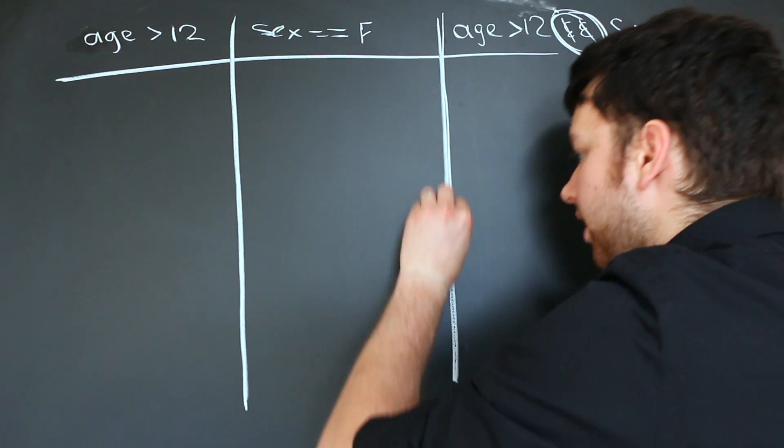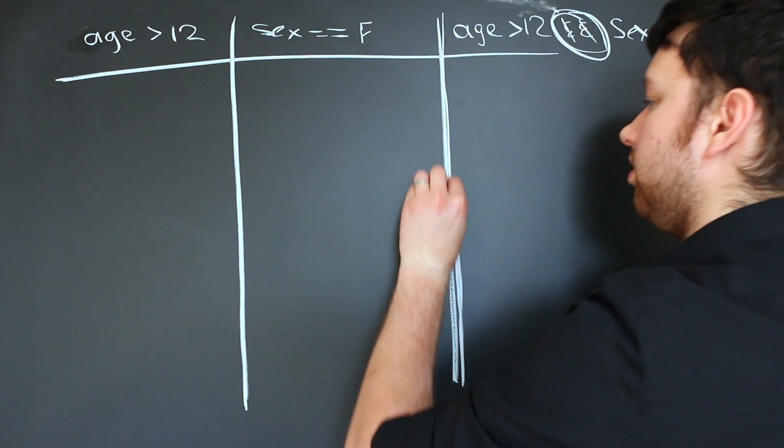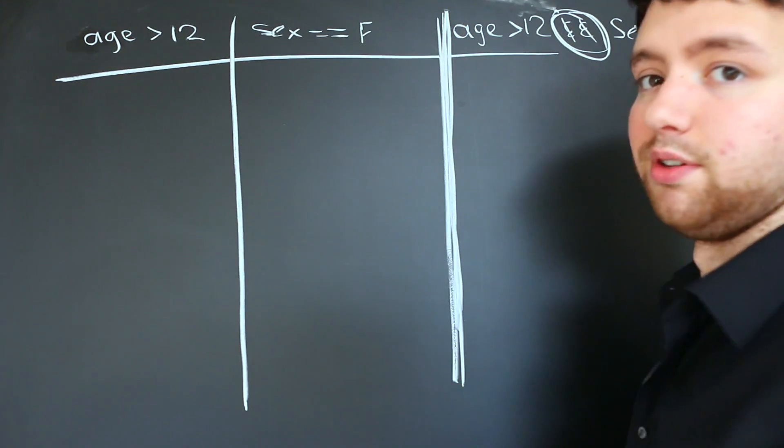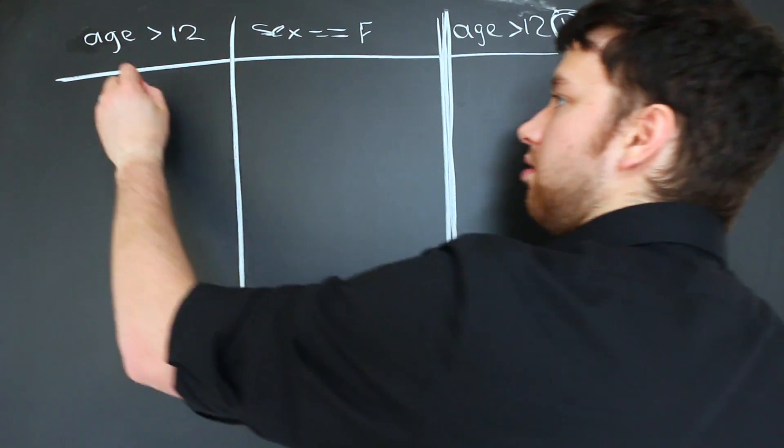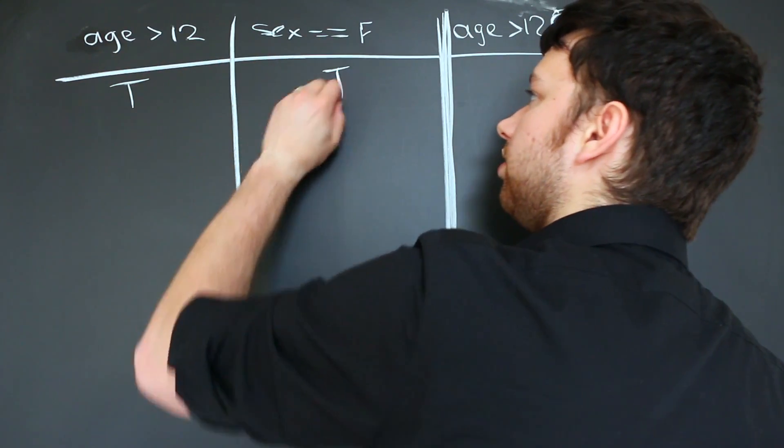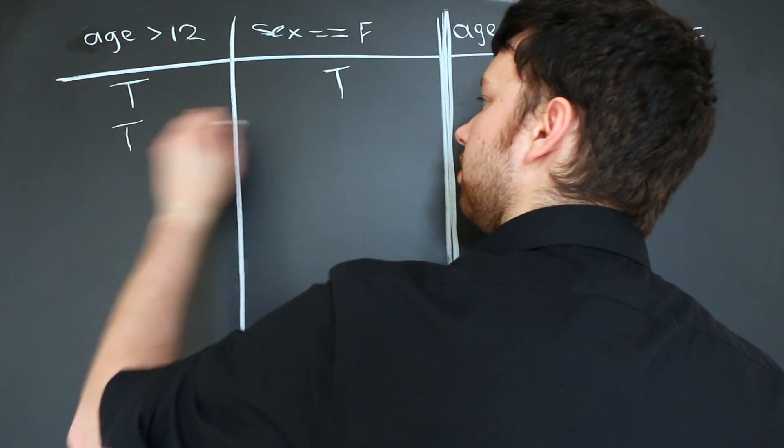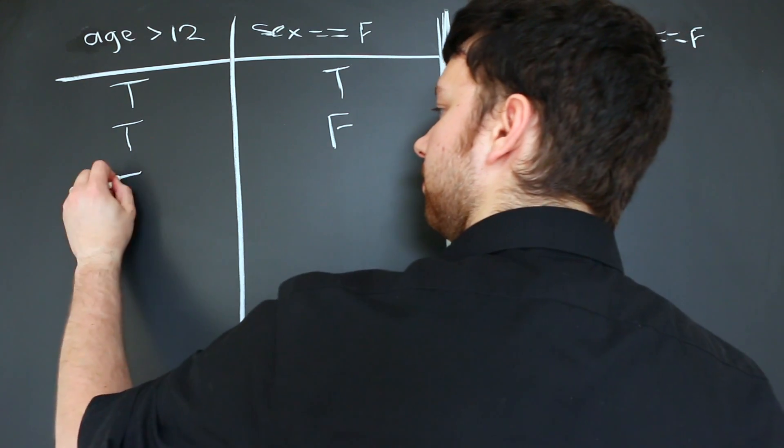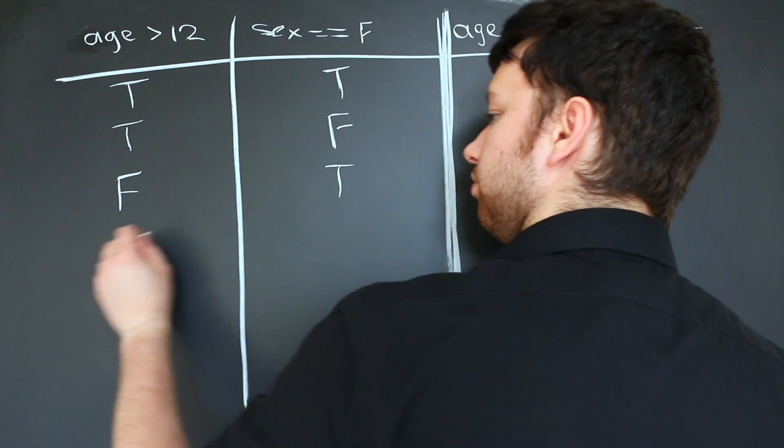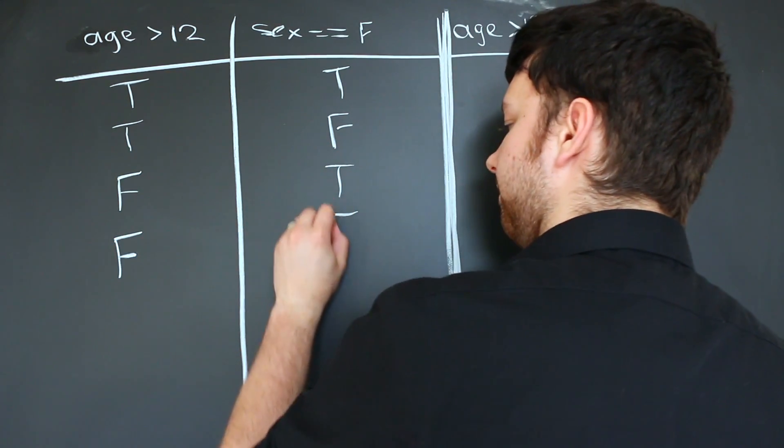So now what we do is we write down every single possible value for the left-hand side. The final right-hand column, that's just the result. So we'll have to do some thinking for that. So what we do is we start with true, true, true, false, false, true, and false, false.